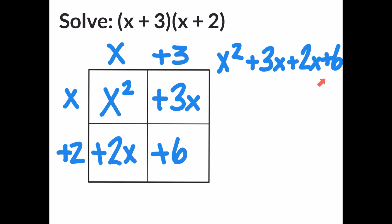There's only one x squared term so I'm writing that as x squared. There are two terms that contain x. I'm going to simplify that by going 3x plus 2x equals 5x. And there's one number term which will be simplified to plus 6.